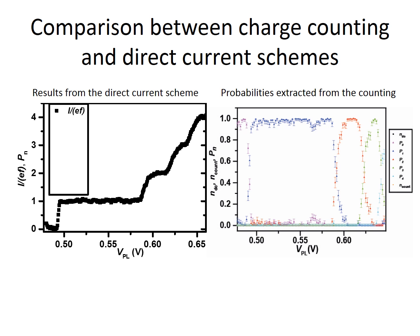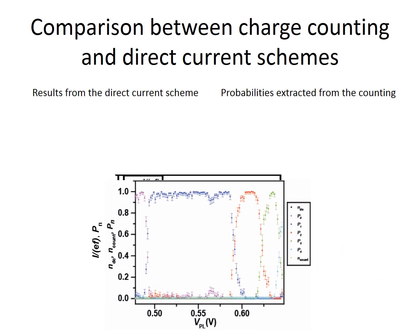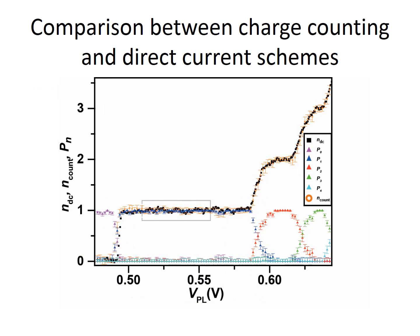Let us compare the results from the two schemes to see if they do agree. Yes, the orange circle showing the average pumped charge obtained from the counting scheme closely follows the value obtained from the direct current scheme.